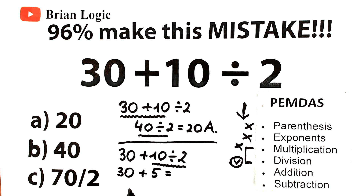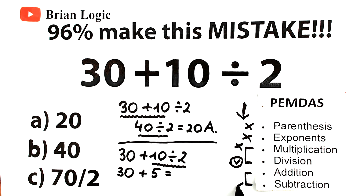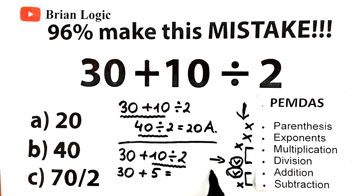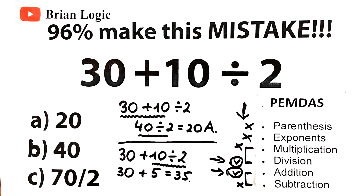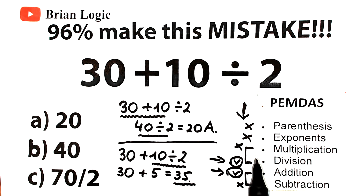We have our answer from the division step, and now we move to the final step: addition and subtraction. We don't have any subtraction, but we do have addition. This is nothing hard — we complete the division step and then complete the addition step: 30 plus 5 equals 35. So 35 is the correct answer according to PEMDAS.